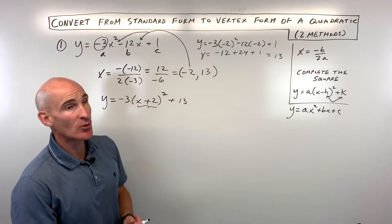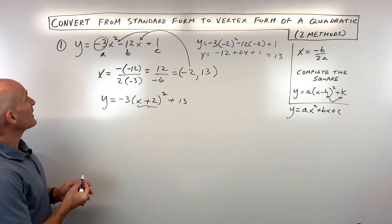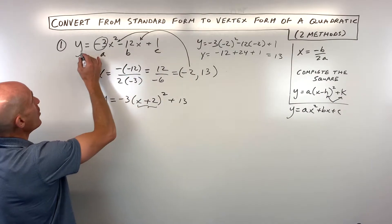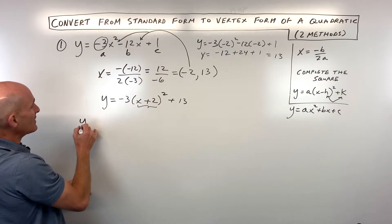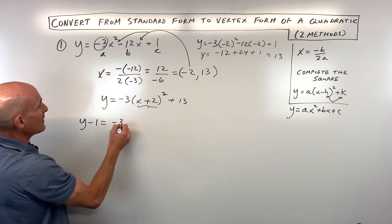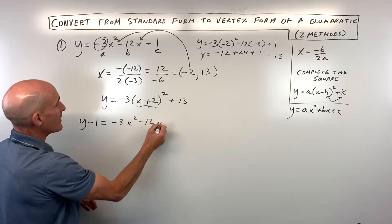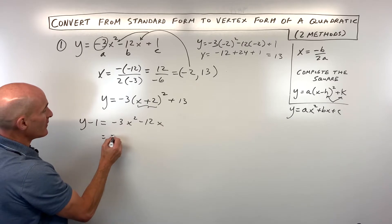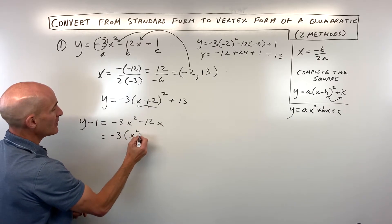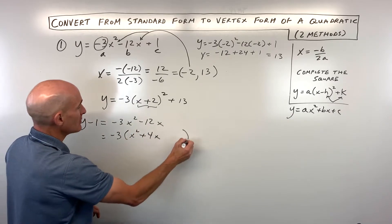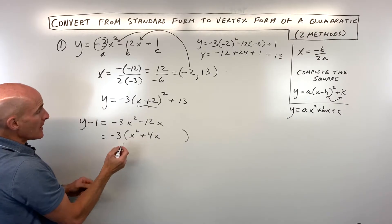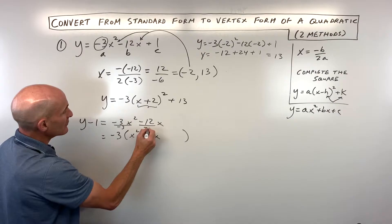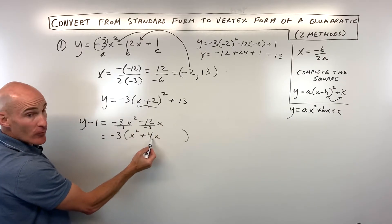Now let's do it by completing the square. We start with our equation and subtract the 1 to the other side to get it out of the way. The next step is to factor out the leading coefficient, the a value. Factoring out negative 3 gives us x squared plus 4x. When you factor out a negative 3, it's like dividing everything by negative 3 — that's how we get 4x.